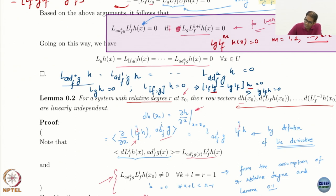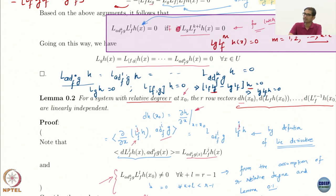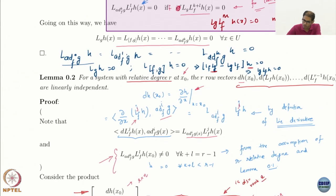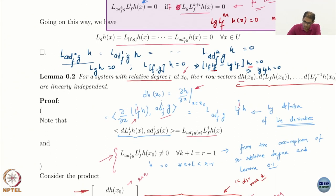What we are saying is that these successive derivatives, until the (r−1)th, r being the relative degree, are linearly independent row vectors. We claim that by doing a matrix multiplication and using the rank inequality: rank of a product of matrices equals the minimum of the two ranks.